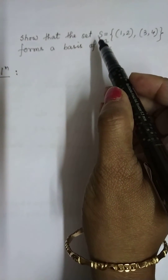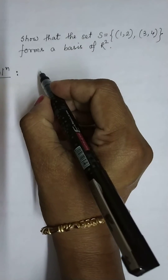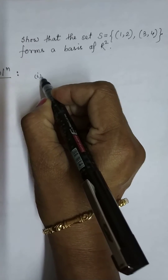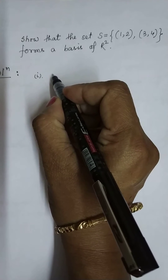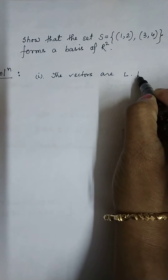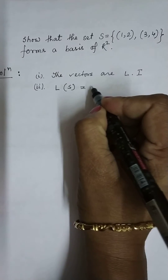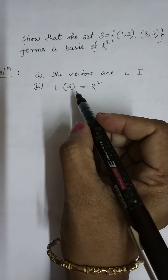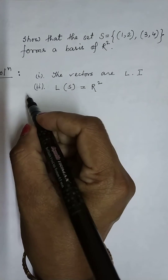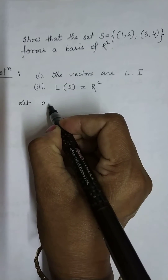We want to show that the set S = {(1,2), (3,4)} forms a basis of R². To show that the set forms a basis, we have to show that the vectors are linearly independent and that S generates the vector space R².